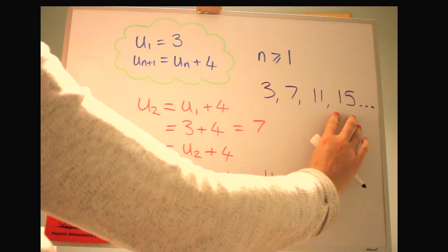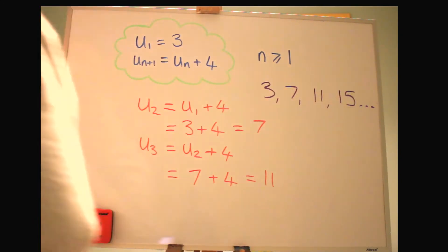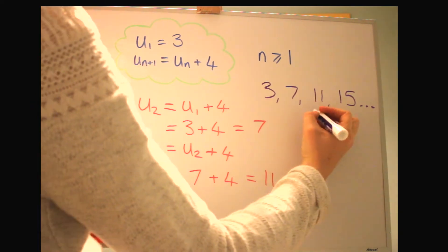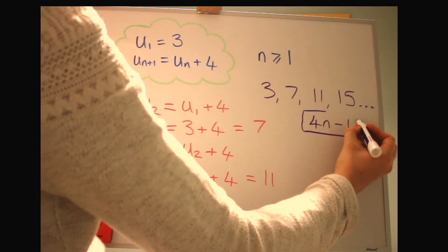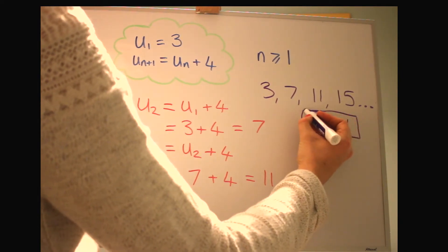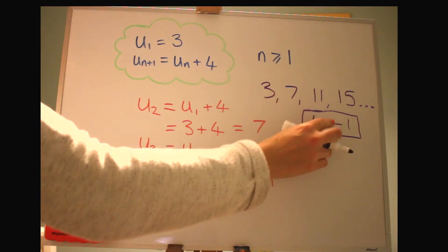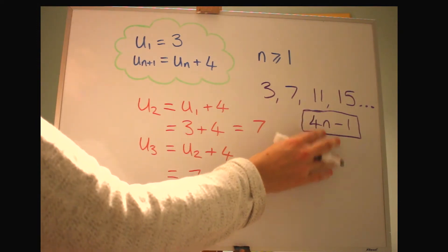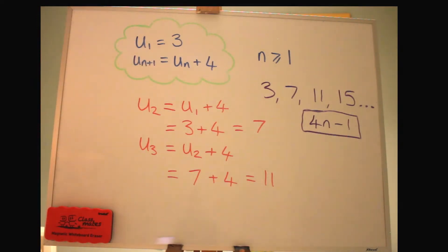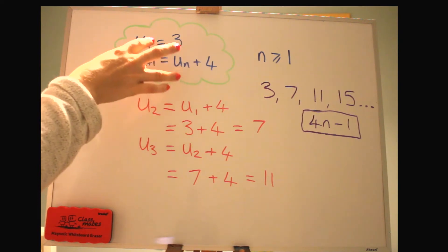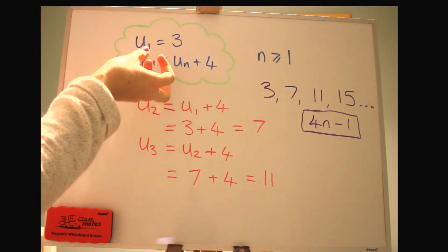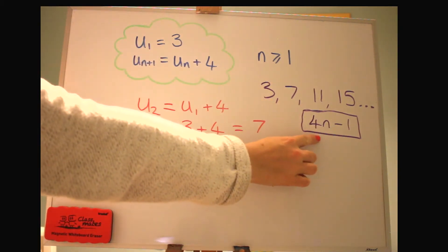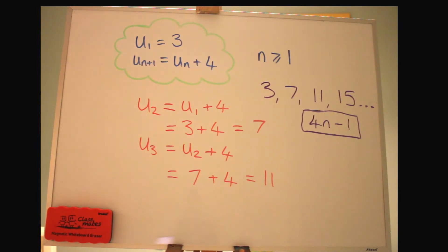So if that's our sequence 3, 7, 11, 15, you're probably already familiar with the nth term. For this one that would be 4n minus 1. So that's one sequence generator you're probably already used to, which you can find for this sequence easily. This is just another way to describe that. But as you'll see in other examples, a recurrence relation is really powerful, a different way of doing it, because it can then describe some more complex sequences which would be really difficult to get using the nth term. Let's look at another one now.